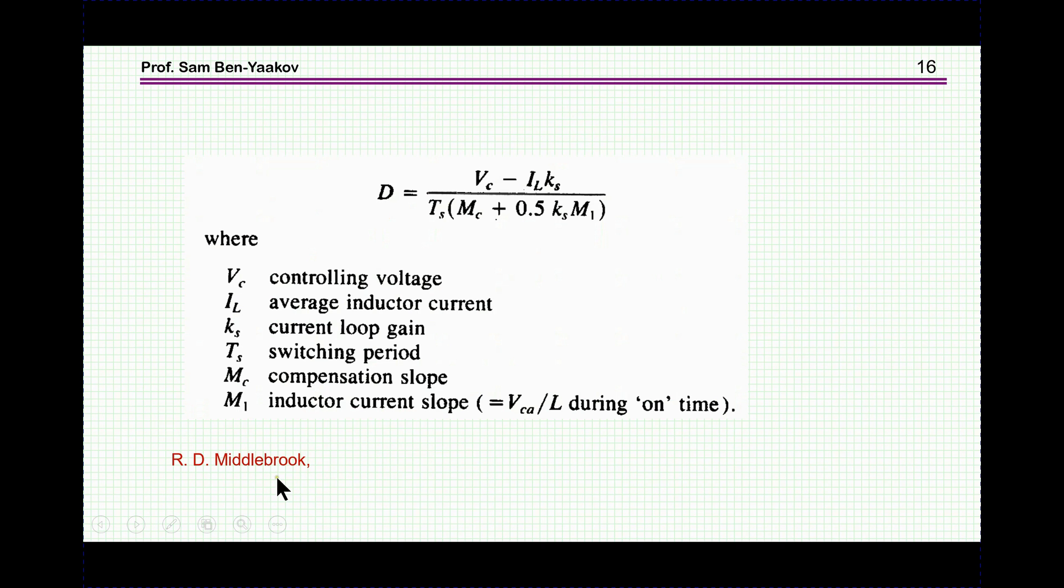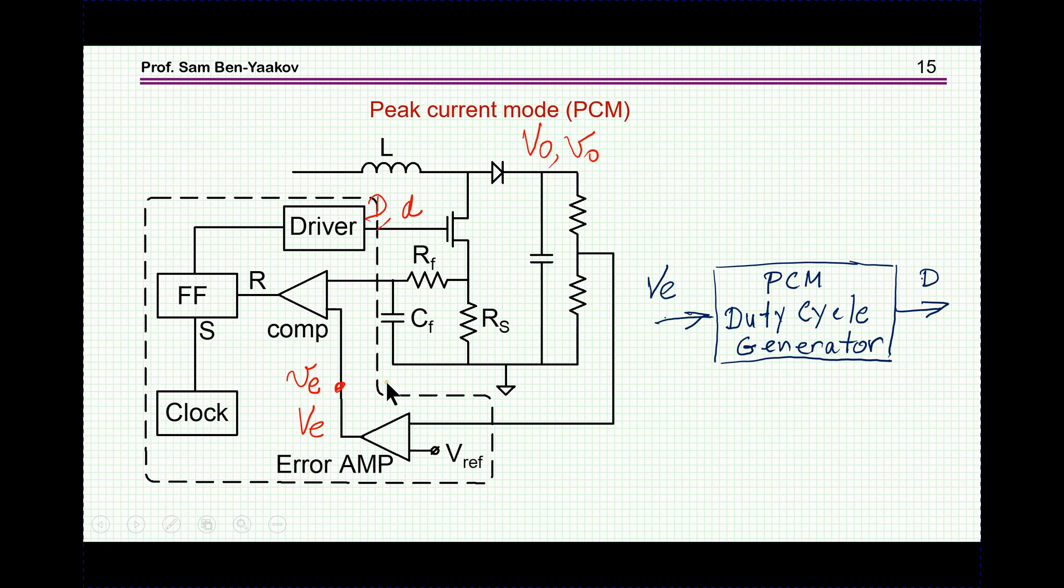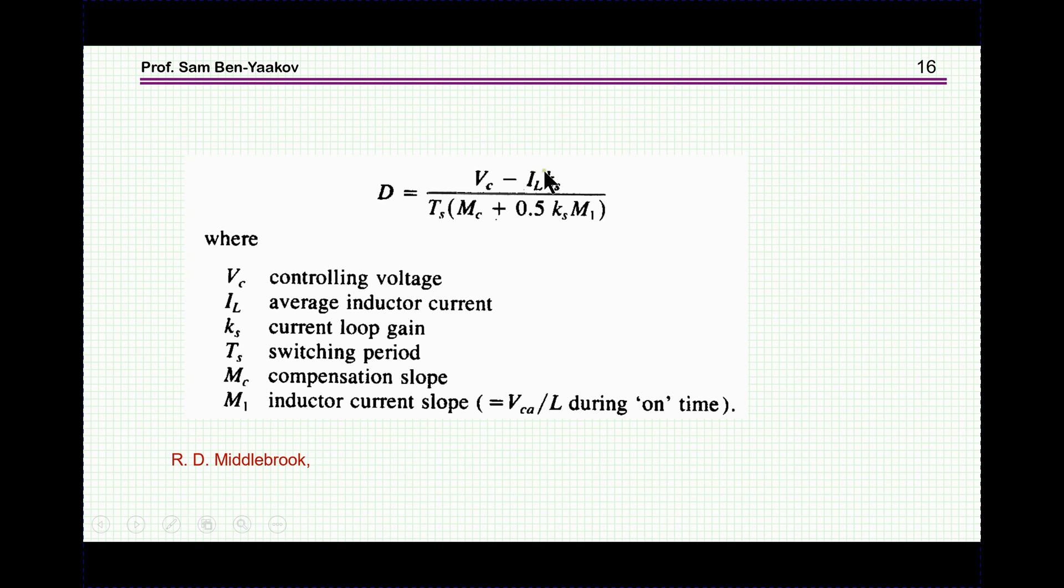That is, you feed in a V, and you get the duty cycle, and then you go on with the stage itself, which is like we had it before. So what we are missing for peak current mode is this duty cycle generator. Now, the late Professor Middlebrook showed this equation, which is very nice. And this is an expression that you can use to calculate the duty cycle in peak current mode. This is the V sub E that I had. This is called controlled voltage, but this is the V sub E I had before. This is this voltage here. And this is the average inductor current. Ks is the sense resistor translating the current to voltage. Ts is the period of the switching frequency.